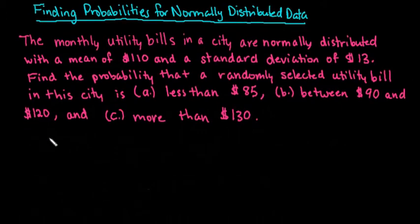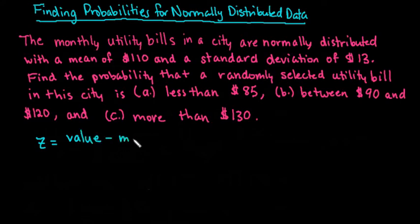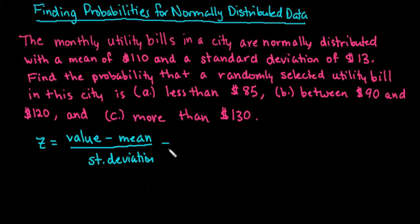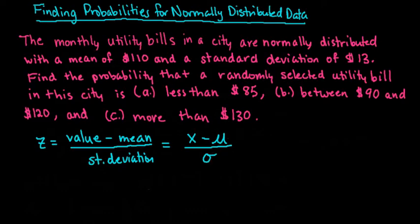In order to do this, you must first convert the random variable x into a z-score. Remember, you would do z equals your value minus your mean divided by the standard deviation. I'm writing it in word form because sometimes the formulas look scary because of all the Greek letters. So x is the random variable, minus our mean which is mu, divided by our standard deviation sigma. The mean and the standard deviation are the two parameters you must know to find the probability or to find a z-score.